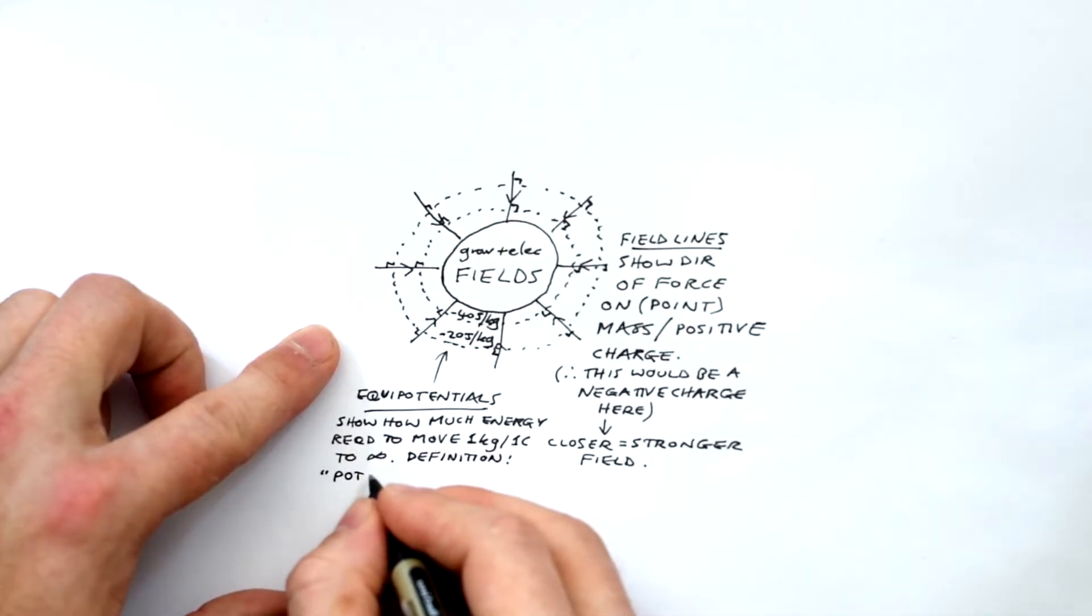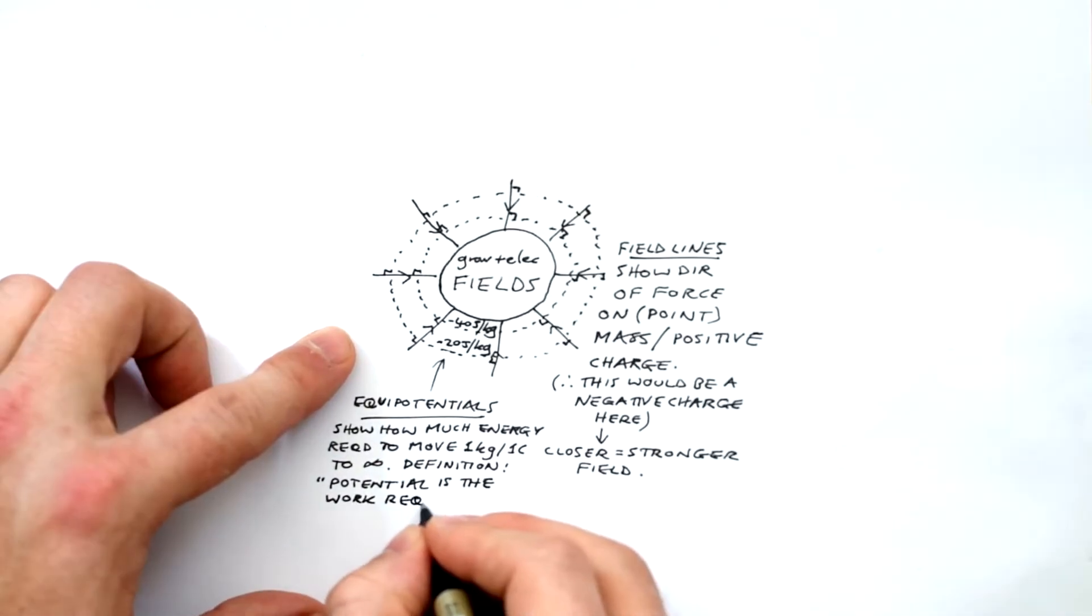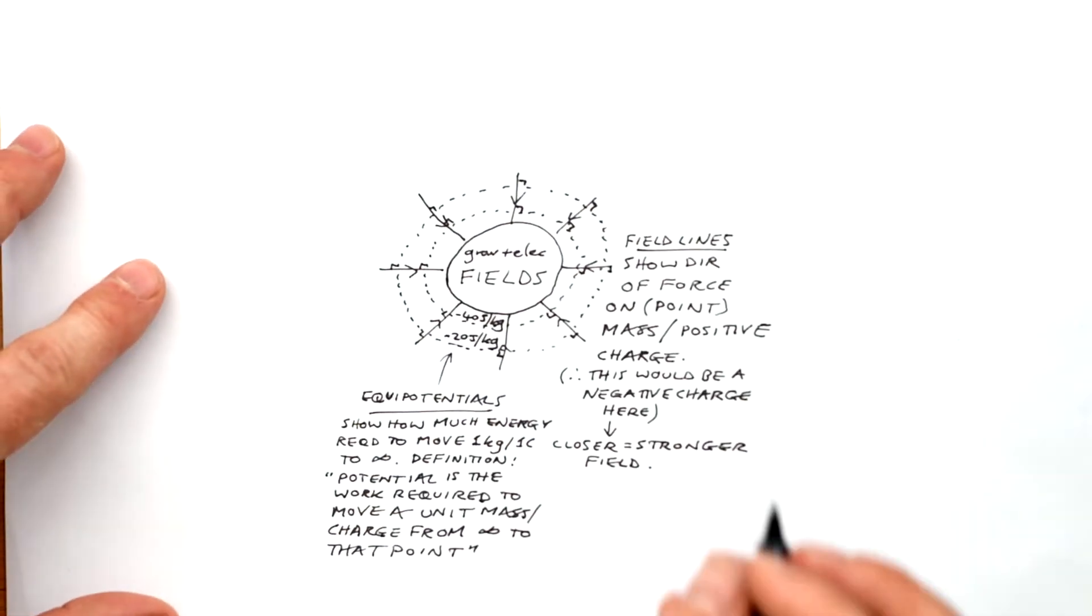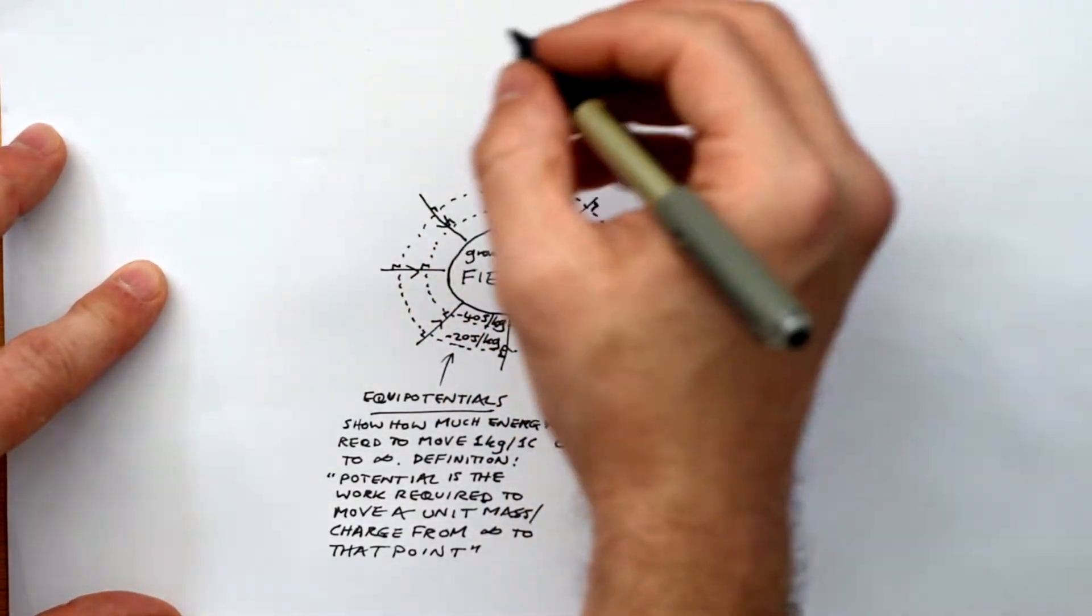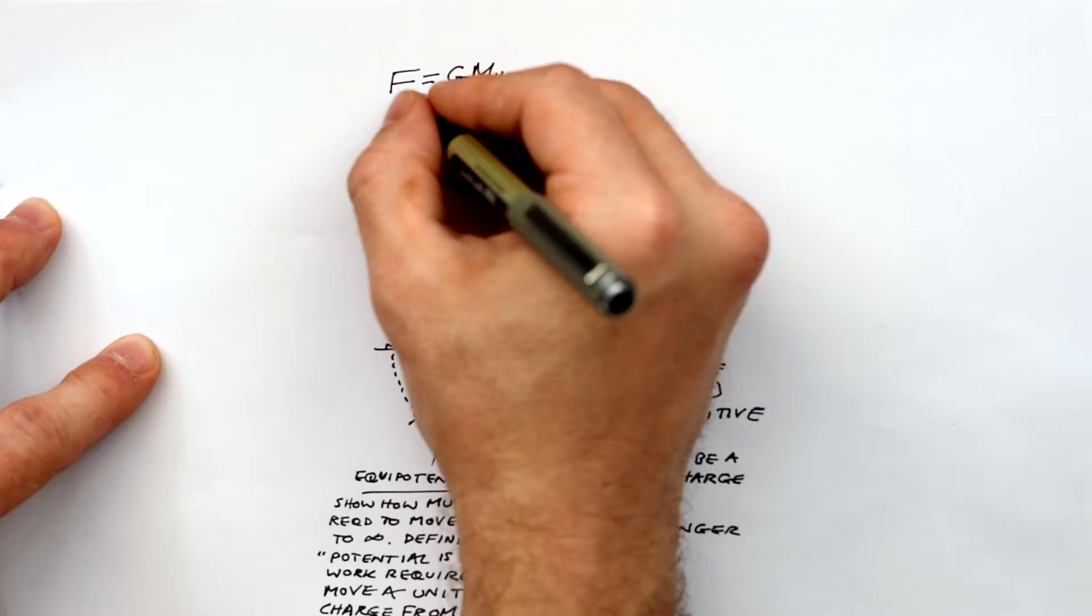And potential shows how much energy you need to move one kilogram or one coulomb to infinity. But the definition is this. Potential is the work required to move a unit mass or unit charge, depending on the field, from infinity to that point. And that's why they're always negative for attractive fields.